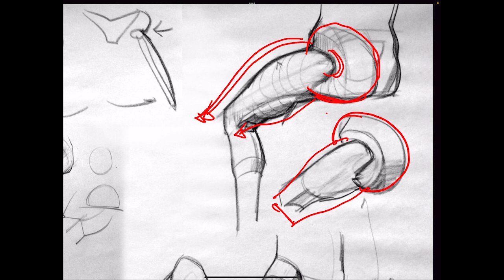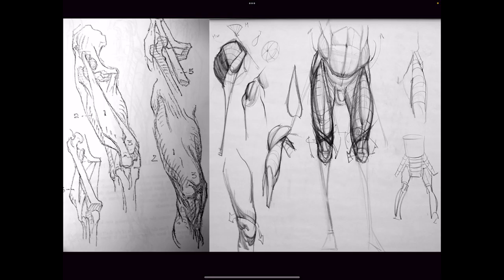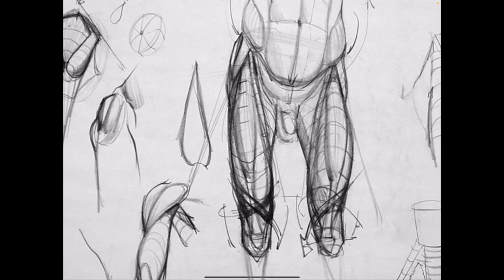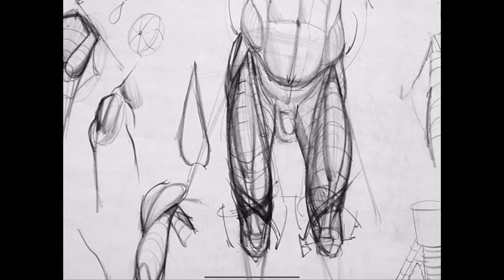Anytime I look at the leg, I want to think about the relationship of the curves. Big, long, sloping curve on the top surface of the leg. The bottom of the leg is made up of two shorter, more abrupt C curves because you're talking about the glutes and the bicep muscles — the hamstrings.